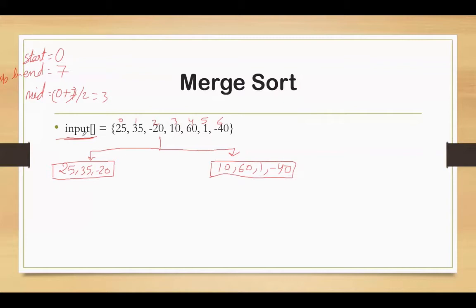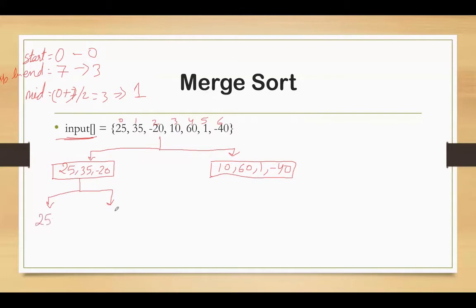When we do the splitting, we keep on splitting the left partition until a single-element array is left. We come back to the left and split it further. Here start is 0, end is 3, and mid comes out to be 1. So index 0 to 0 forms the left partition — which is 25 — and indices 1 to 2 form the right partition containing 35 and -20. Then we come back to the right side and split it further: 35 and -20 are split into two individual elements.